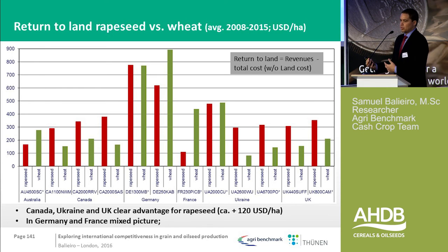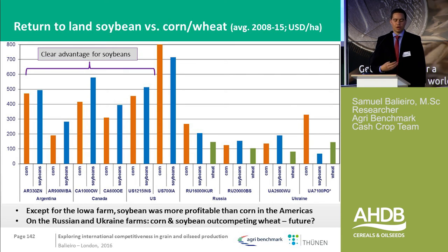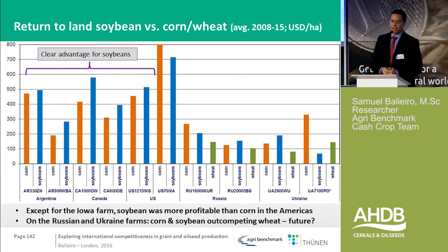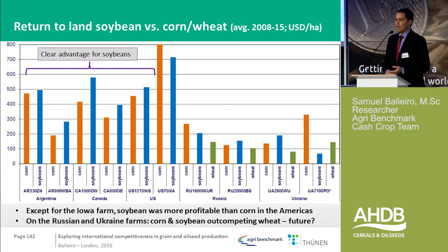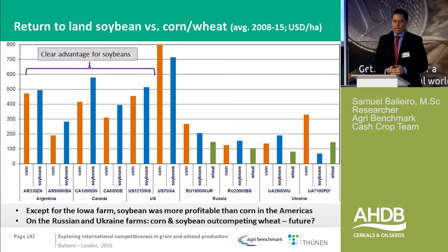Comparing soybeans to other crops, similar to rapeseed, soybeans have been more profitable across the whole Americas except Iowa. What is very interesting is that on the right side of the graph — Russia and Ukraine — in those regions, corn and soybeans are more profitable than wheat. We see a strong movement in this direction, which helps explain why farmers are moving to soybean and corn production.